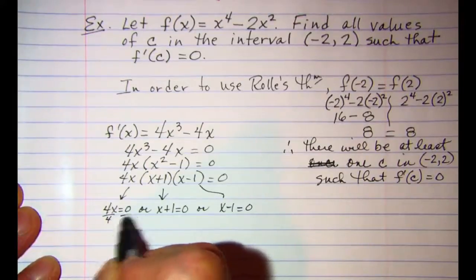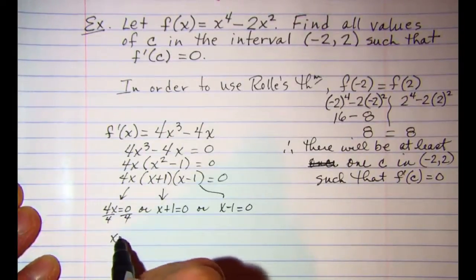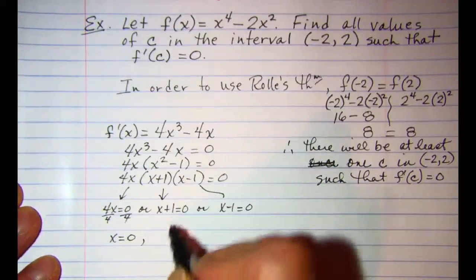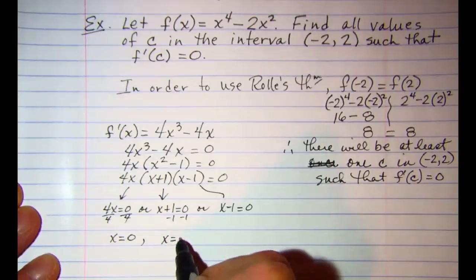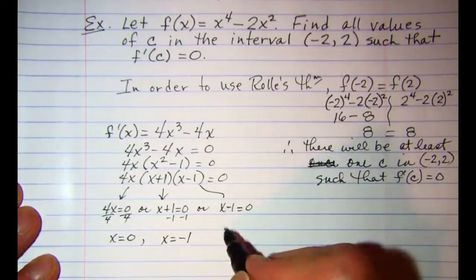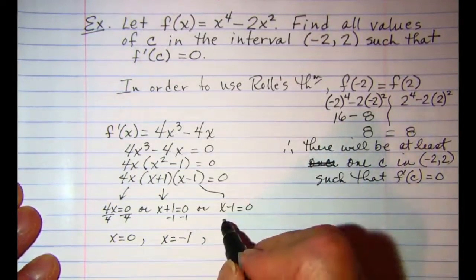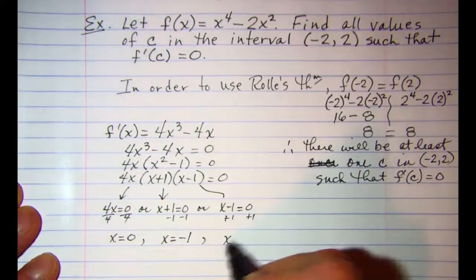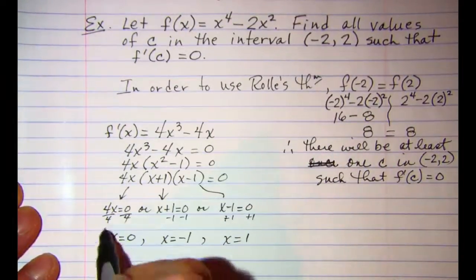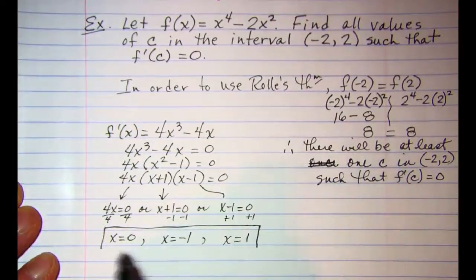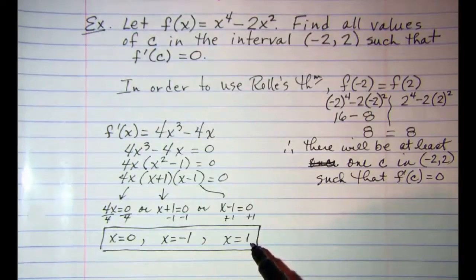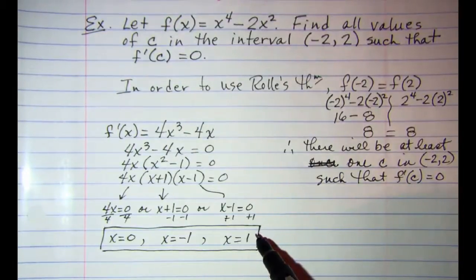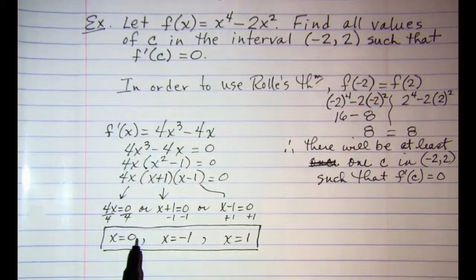So divide both sides by four here we get x is equal to zero, negative one, and add one to both sides here we get x is equal to one. So these are the values, the c values that cause the derivative to be equal to zero.